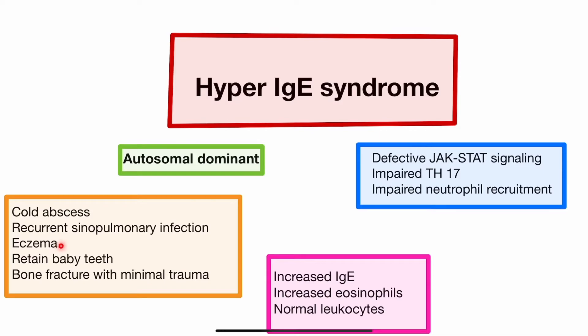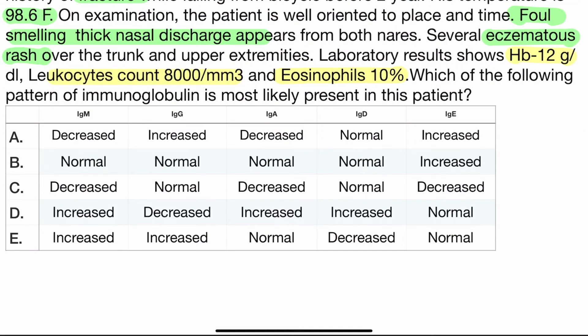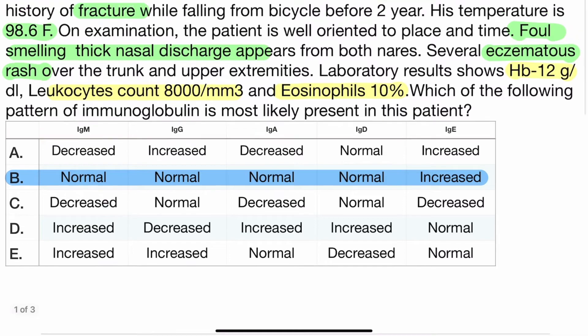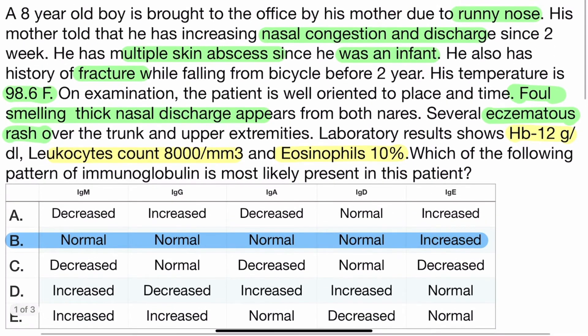The patient also presents with eczema (atopic dermatitis), which leads to increased eosinophil count and increased immunoglobulin. In the laboratory, we find increased immunoglobulin IgE, but other immunoglobulins — IgM, IgG, IgD, and IgA — will be normal. So our answer is B; only IgE is elevated.